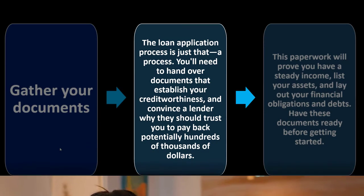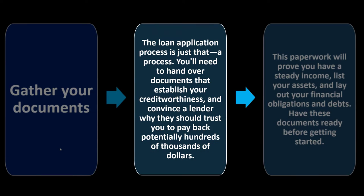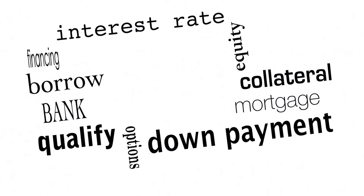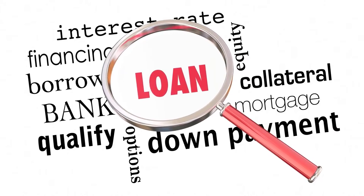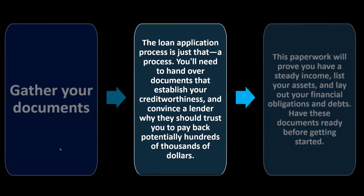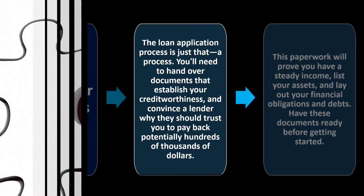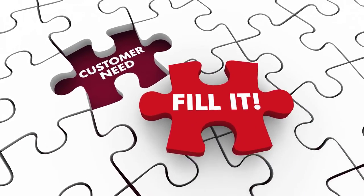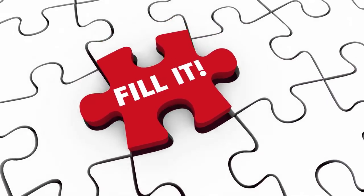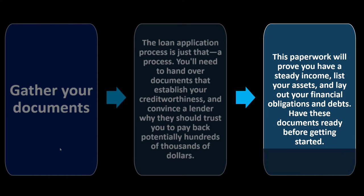The bank is making money from the interest on your loan payments. They want to give the loan, but they're balancing that versus the risk — the likelihood that you're going to pay back the loan. If you think of it from the lender's perspective, it'll be easier to comply with what they're doing and understand why, so you can give them what they need. This paperwork will prove you have a settled income, list your assets, and lay out your financial obligations and debts. Have these documents ready before getting started.